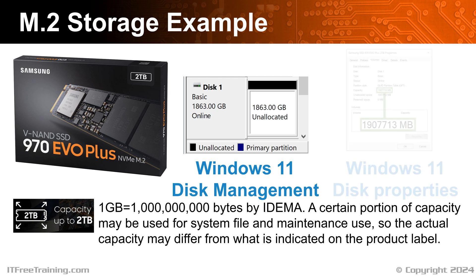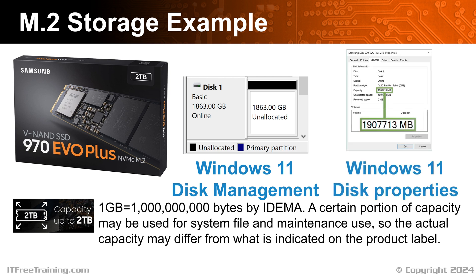To understand this a bit better, I will open the properties for the storage. In properties, the capacity is reported as about 100,000 under 2 million megabytes. 2 million megabytes would be 2TB, so this is pretty close. When you are using Windows, you need to keep in mind that the storage in some cases may get reported differently depending on which system of units is being used.